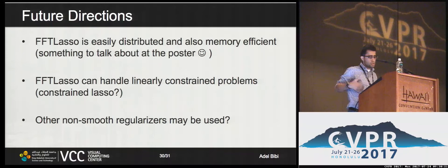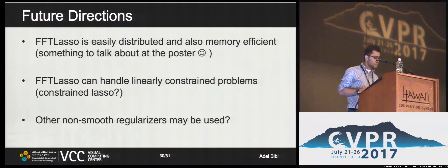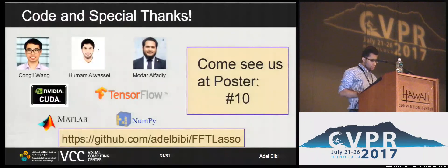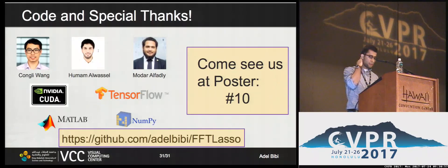To sum up, FFT-Lasso is easily distributed and memory efficient. It can naturally handle linear constraints without adding complexity — for example, constrained lassos. Future directions include looking at other non-smooth regularizers since we're mostly interested in the data-fitting term. We have a TensorFlow code for a multi-GPU version where you can simply specify the number of GPUs and distribute over them. Thank you for listening, and please come see us at Poster 10.